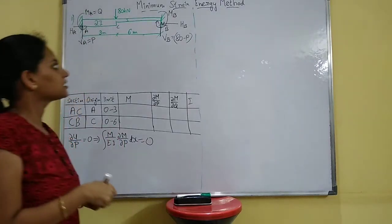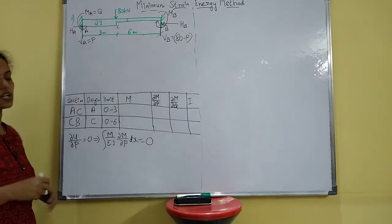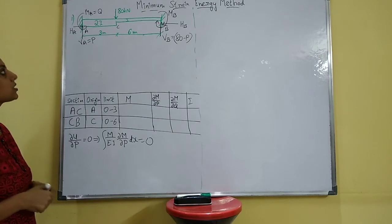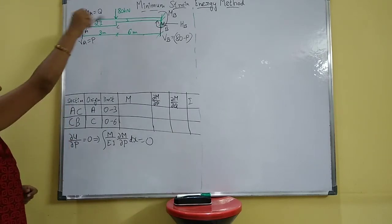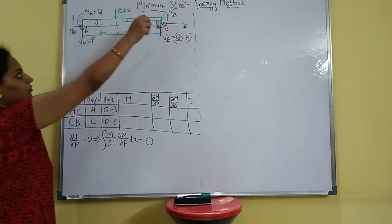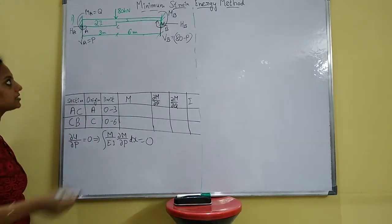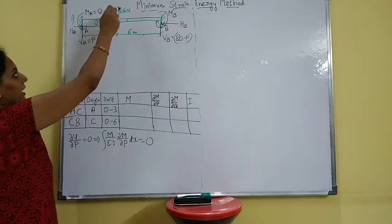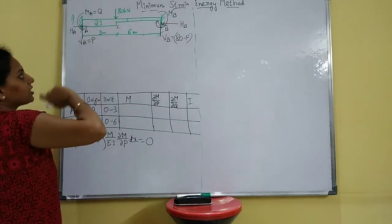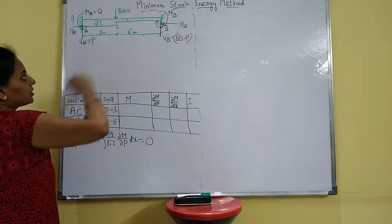Hello everyone, we will see the continuation of minimum strain energy problems. This is another problem where you have a fixed beam at both ends. 80 kilonewton is given as the load, 3 and 6 meters apart.